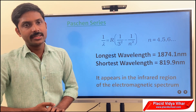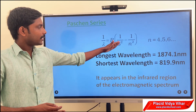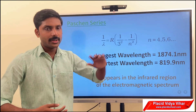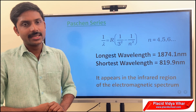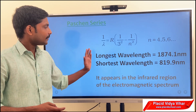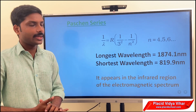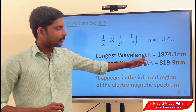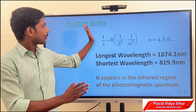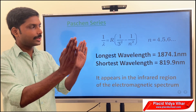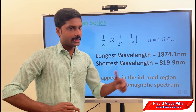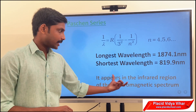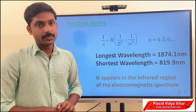Next is the Paschen series, where n1 equals 3 and n2 can be 4, 5, 6, etc. The longest wavelength in this series is 1874.1 nanometers and the shortest wavelength is 819.9 nanometers. The Paschen series exists in the infrared region of the electromagnetic spectrum.